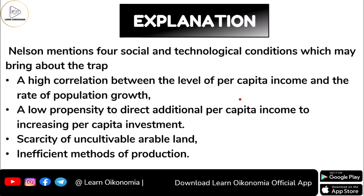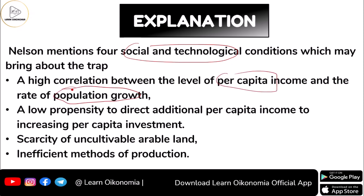Nelson identified four important social and technological conditions which might bring about this trap. First, whenever there exists a correlation between per capita income and the population growth rate, there are high chances for the economy to experience a low-level equilibrium trap if the population growth rate is more than the rate of growth of income.